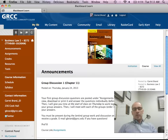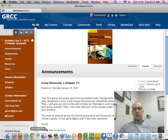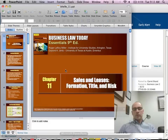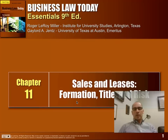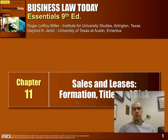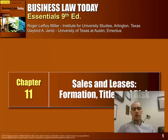I'm just going to go through the slides for Chapter 11 here. We are transitioning out of intellectual property and internet law to a discussion of the Uniform Commercial Code and contracts for the sale of goods, contracts for the lease of goods. This is the foundational chapter where we take a look at how these contracts are formed and the concepts of title and risk.